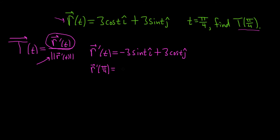So r prime of pi over 4 is negative 3 sine of pi over 4 i hat plus 3 times the cosine of pi over 4 j hat. The sine of pi over 4 is the square root of 2 over 2, so this will be negative 3 square root of 2 over 2 i hat. And the cosine of pi over 4 is also the square root of 2 over 2, giving us plus 3 square root of 2 over 2 j hat.